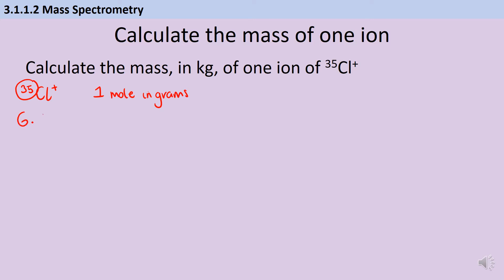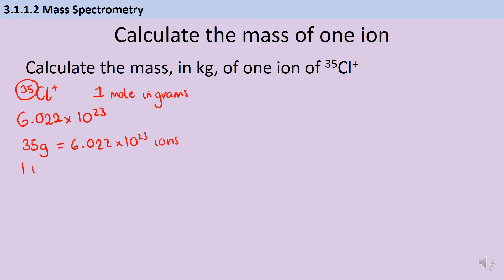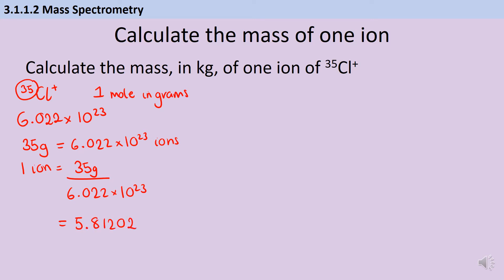At GCSE you also needed to memorise the value of the Avogadro constant, but at A-level you do get given this in the exam paper. So I know that if I have 35 grams of these ions, then there are going to be 6.022 × 10²³ of them. So if I want to know what the mass is of a single ion, I need to take the molar mass of 35 and divide it by the Avogadro constant. Doing that, I get a mass for a single ion of 5.81202 × 10⁻²³ grams.